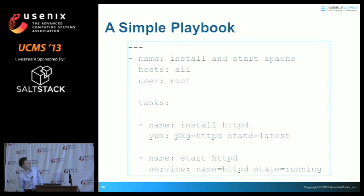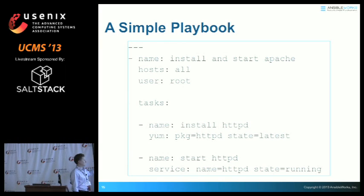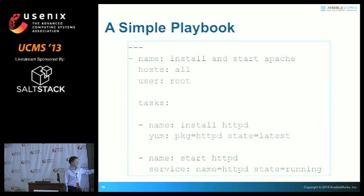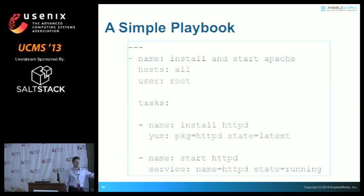Here's an example — a full playbook with one play and two tasks. First we have the name of the play, then we tell Ansible which hosts it's targeting — here, all hosts; in the real world it'd be something like 'hosts: webservers.' The tasks are also named — free-form names. You can say 'install httpd' and call the yum module, give it a package name, and ask Ansible what state you want: present, absent, latest, or a specific version. Then we start the Apache service with the service module — state equals running, and if it needs to be changed, Ansible will make it so.